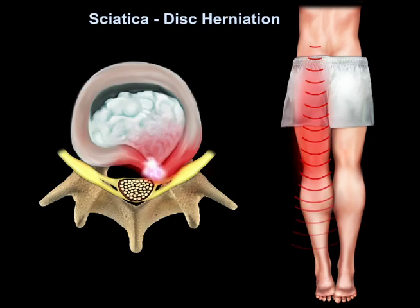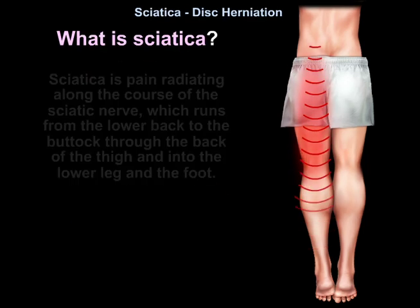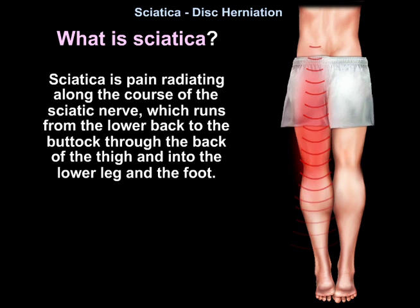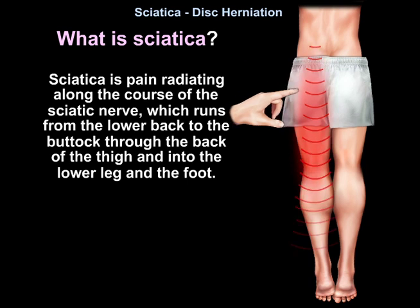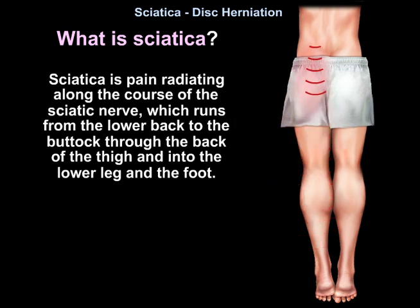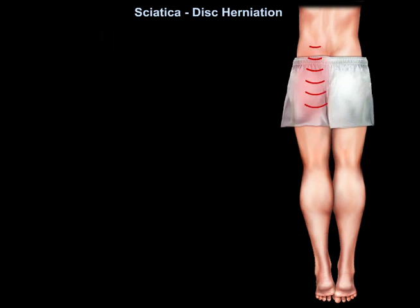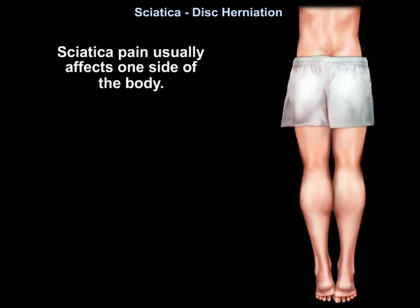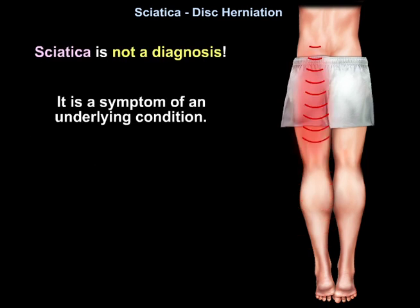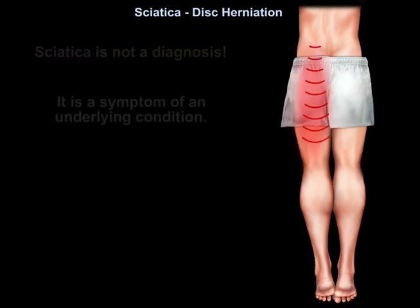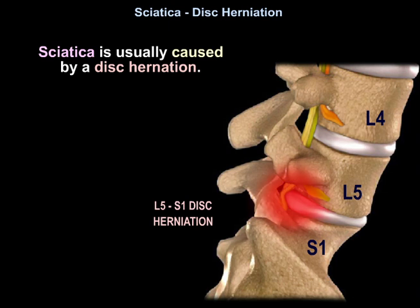Sciatica is pain radiating along the course of the sciatic nerve, which runs from the lower back to the buttock, through the back of the thigh, and into the lower leg and foot. Sciatica pain usually affects one side of the body. Sometimes this pain is called lumbar radiculopathy or true sciatica. Sciatica is not a diagnosis — it is a symptom of an underlying condition, usually caused by disc herniation.